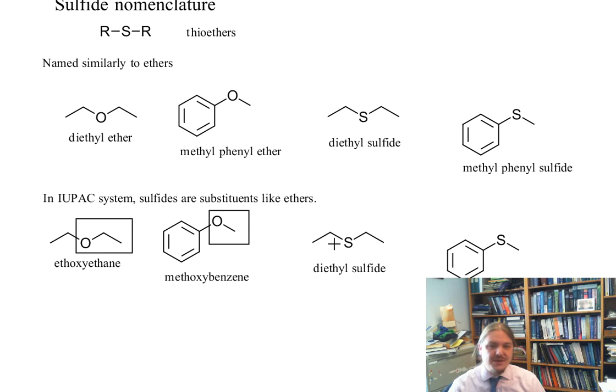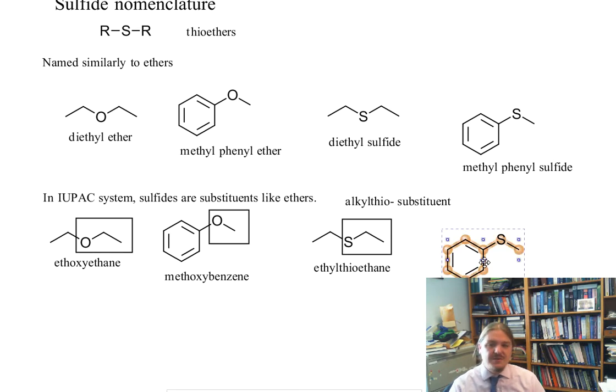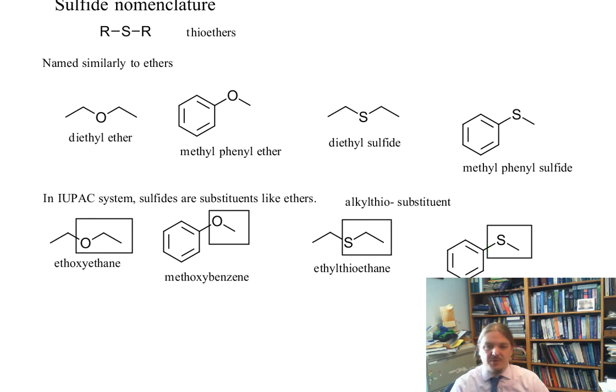The substituent name in thioethers or sulfides is the alkylthio substituent. So in terms of diethyl sulfide, we would have not diethyl sulfide but ethylthioethane. And in terms of methylphenyl sulfide, we would have methylthiobenzene. And so the nomenclature is very straightforwardly simple and comparable to what we do with ethers.